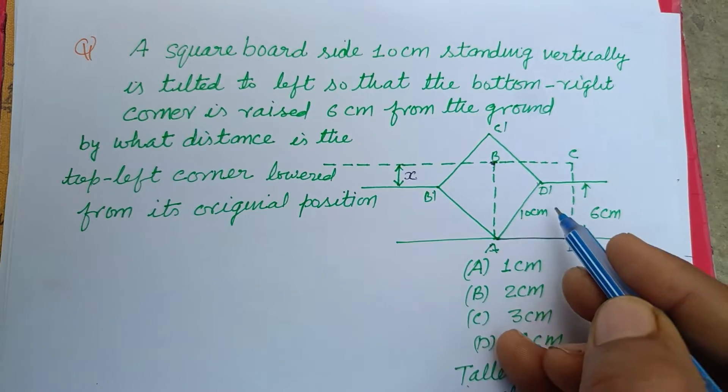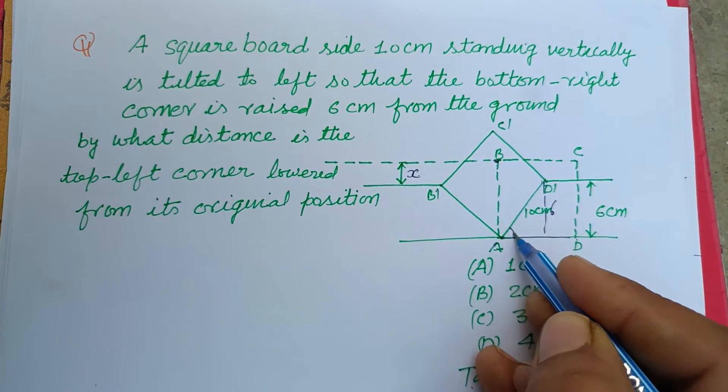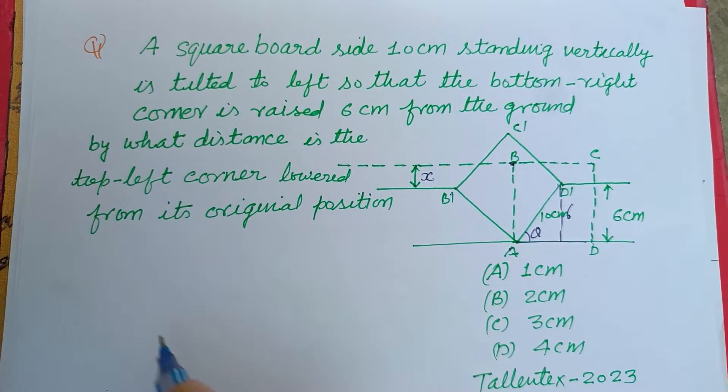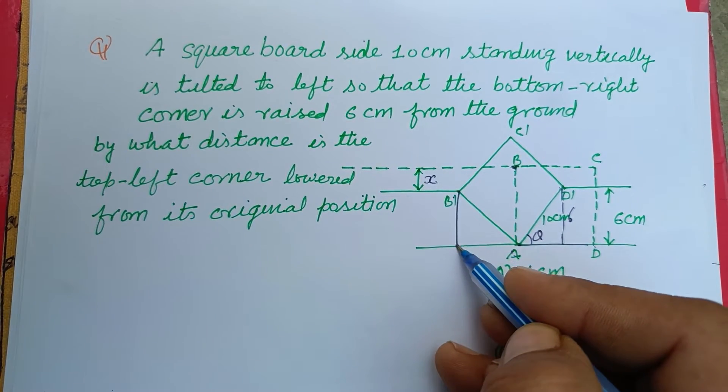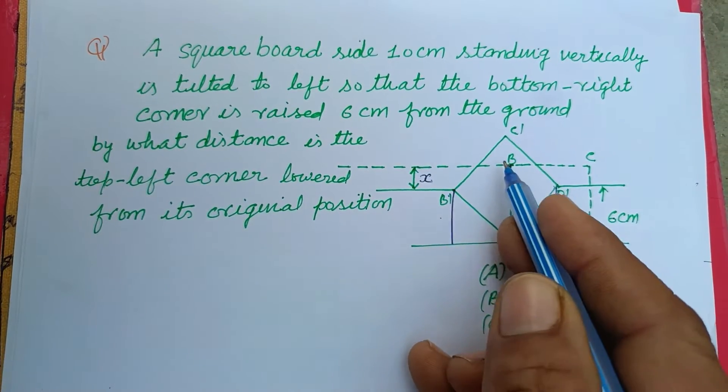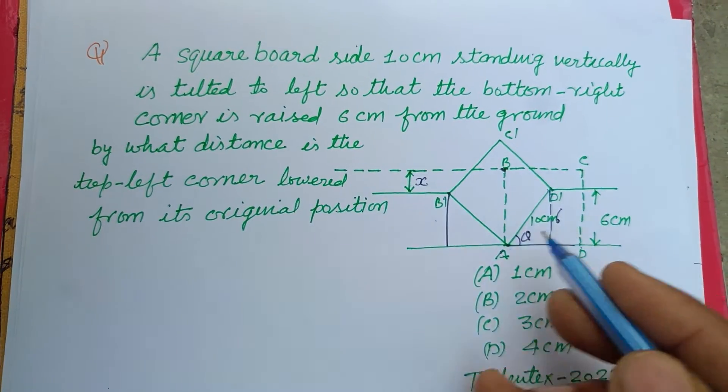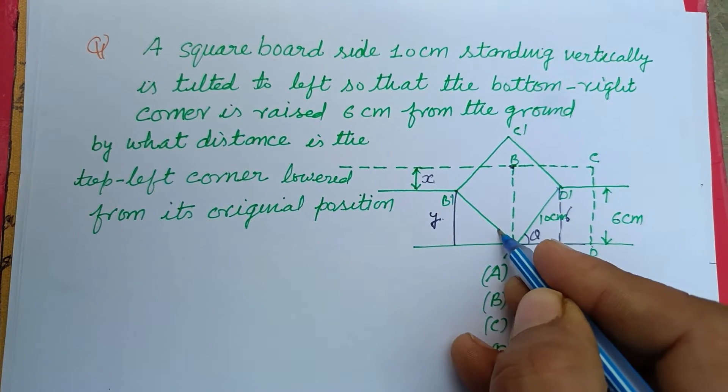Let this be theta. From this we can find here, if we find this we can easily get this X, because total is 10. So let it be Y. Okay, this is also theta.